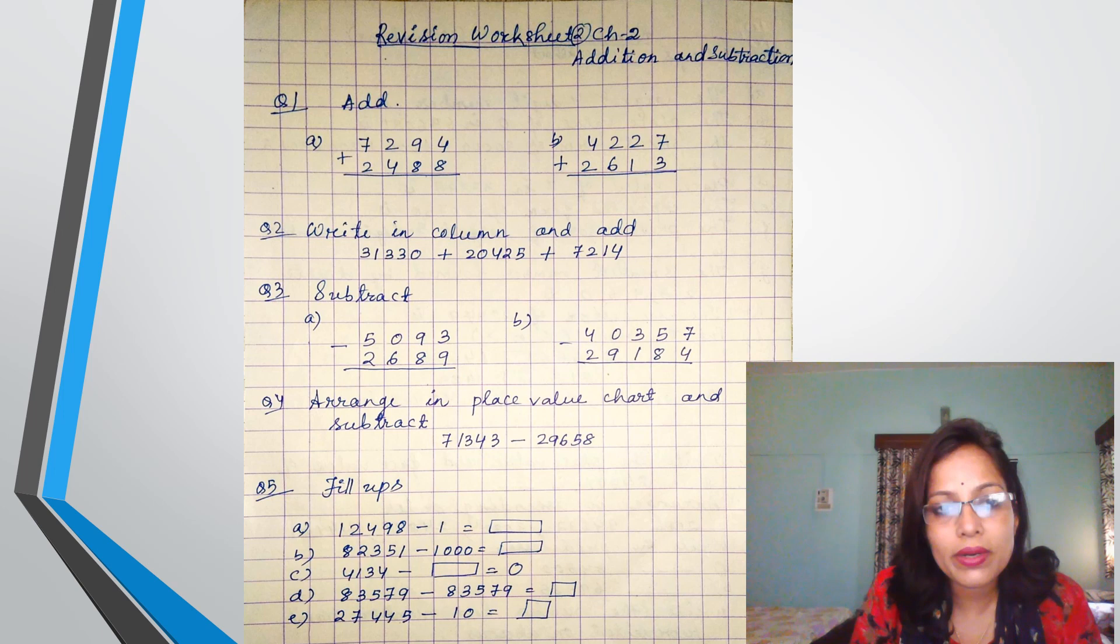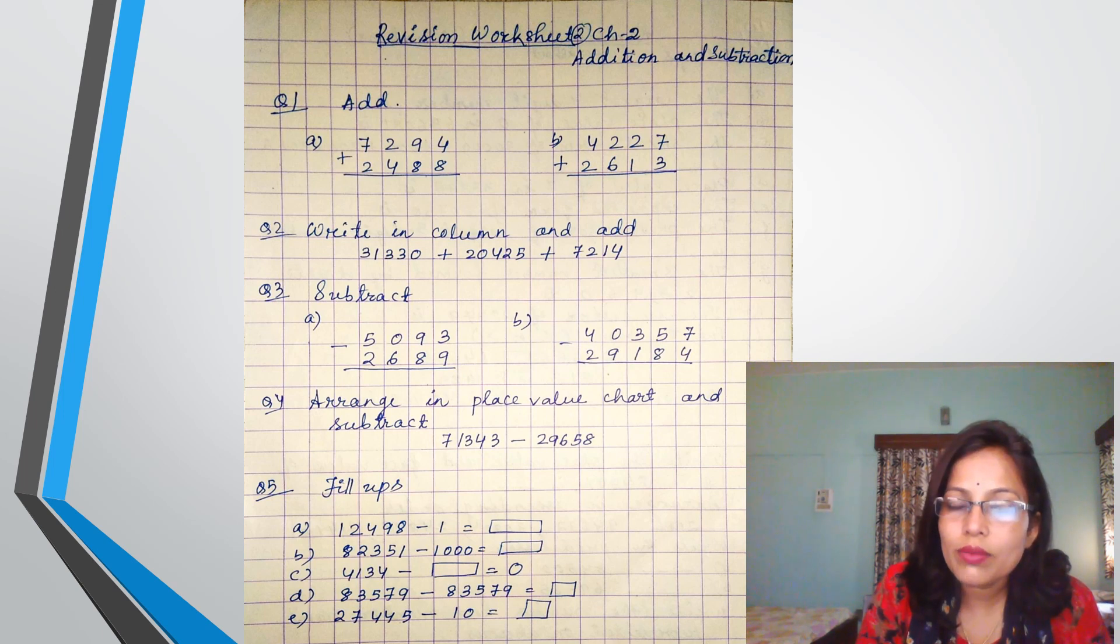See the first question. Here I have prepared the first question for you, that is number 1, add. So what to do? 7,294 plus 2,488. Here I have written all the numbers in proper place value. Or you can write 1, 10, 100, 1000, then you write the number and add. Second question: 4,227 plus 2,613.